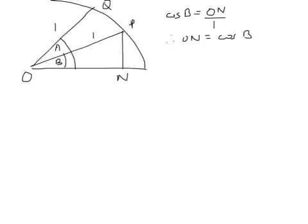Let's think about triangle OPN again, and think about the sine of B. The sine of B is opposite, that's PN over hypotenuse, that's 1. So therefore PN is sine B. So the coordinates of P are cos B, sine B.